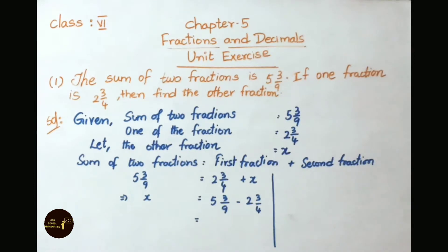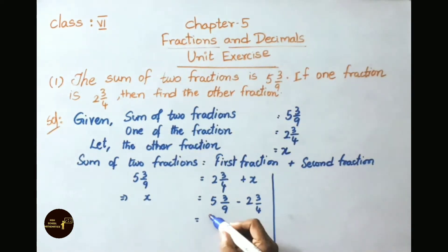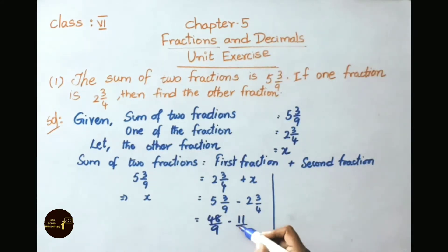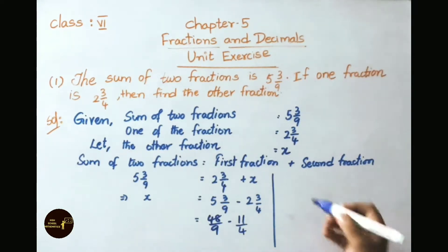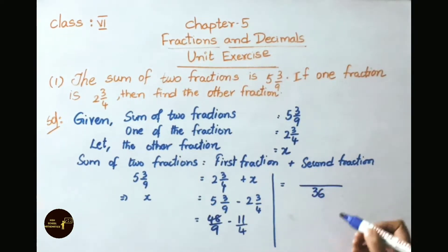Now these are mixed fractions. Let us convert them to improper fractions. 9 times 5 is 45, plus 3 is 48, so we get 48 by 9. Minus: 4 times 2 is 8, plus 3 is 11, so we get 11 by 4. Now we have to find the LCM of denominators 9 and 4. So LCM is 36.